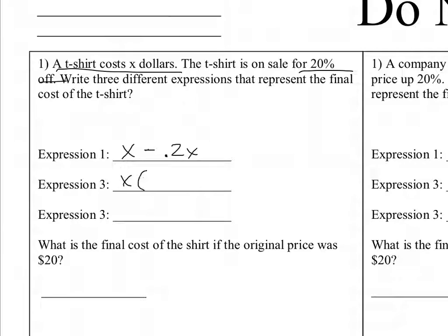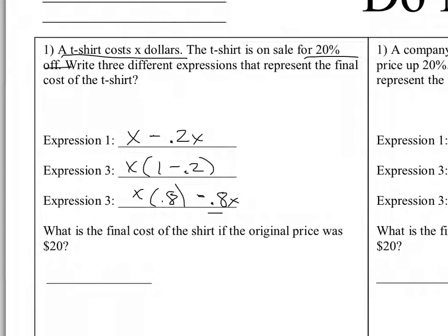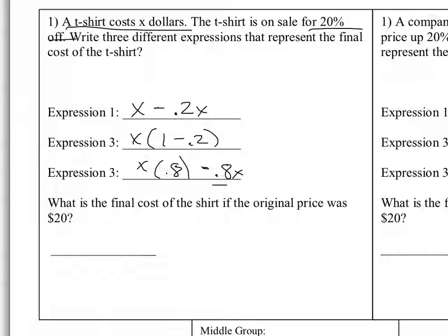If we factor that out, that's going to give us x times (1 minus 0.2), which is x times 0.8, or we could also write this as 0.8x. Because when we look at this, we're talking about the 80% of the price that's remaining, so that's 80% of x.